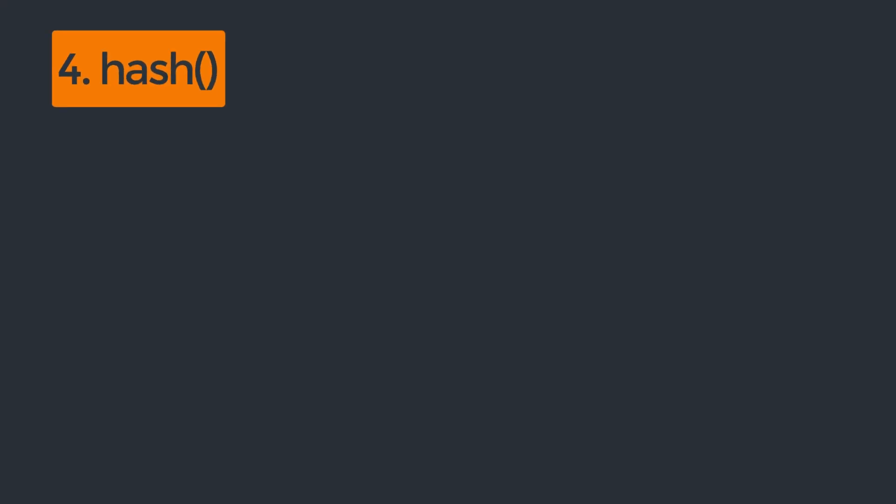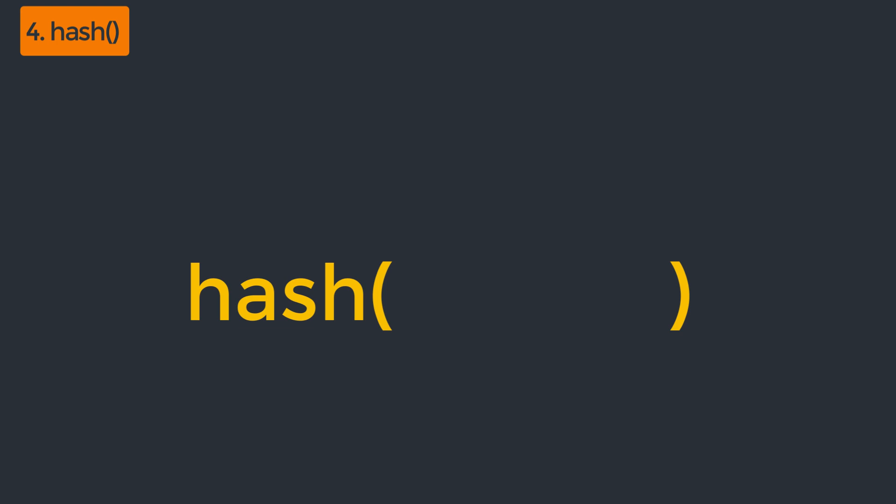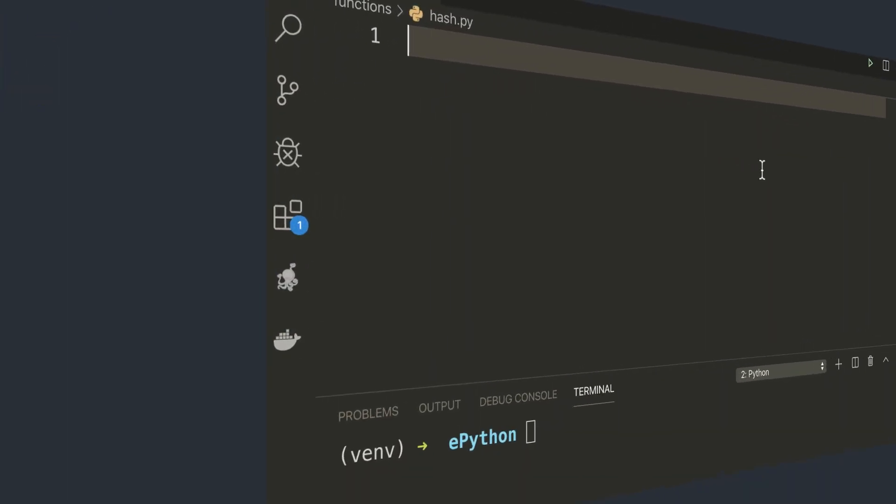The next function is the hash function. The hash method returns the hash value of an object if it has one. Hash values are integers used to compare dictionary keys during a dictionary lookup quickly. Internally, the hash method calls the __hash__ method of an object, which is set by default for any object. The syntax of the hash function is simply hash, and we have to pass the object as the only parameter. The hash method returns the hash value of an object. If an object has a custom __hash__ method, it truncates the return value to the size of Py_ssize_t.